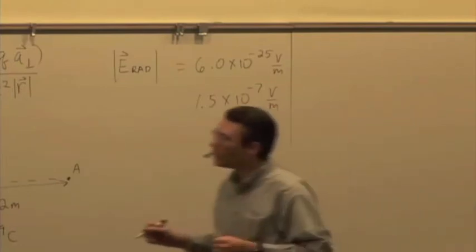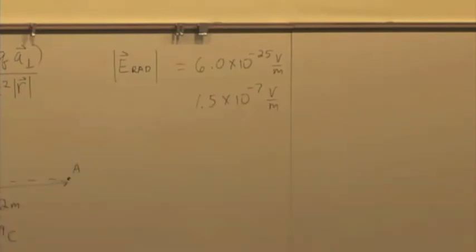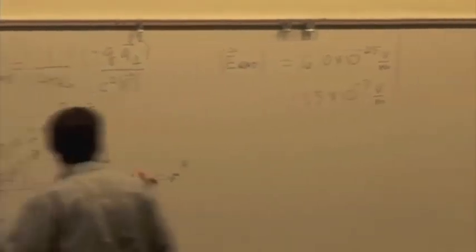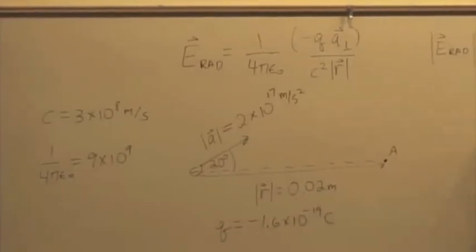1.5, 10 to the minus 7. Oh, which one? 9 times 10 to the ninth. That's the one constant we need to write, 9 times 10 to the ninth. Well, let's check it. Okay, let's check it. We have 9 times 10 to the ninth.